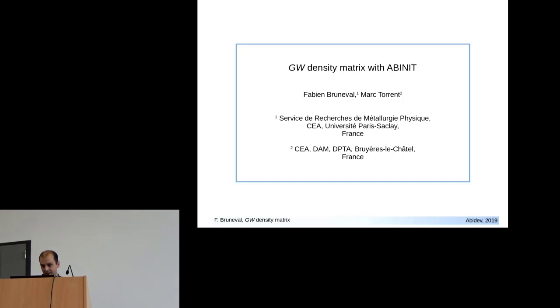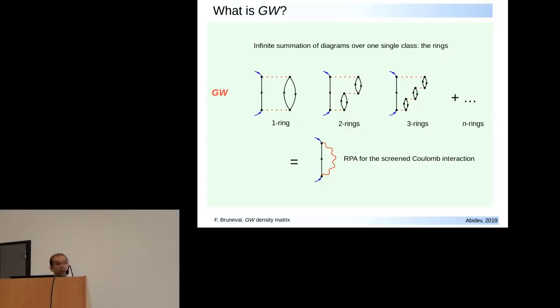GW is a Green's function method that includes electronic correlation in the framework of Green's function or Feynman diagrams. Typically you have diagrams like that where an arrow stands for the Green's function G and then the Coulomb interaction is the dashed red line. Typically in GW we include a class of diagrams with a ring diagram with an arrow going up and an arrow going down. These are electron-hole pairs, one electron-hole, two electron-holes, three electron-holes and so on.